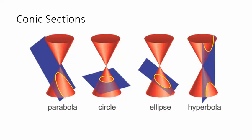In this video I want to introduce you to a group of shapes called conic sections. They are called conic sections because they are produced by intersecting a plane through two cones, or possibly one cone, depending on how the plane is angled.